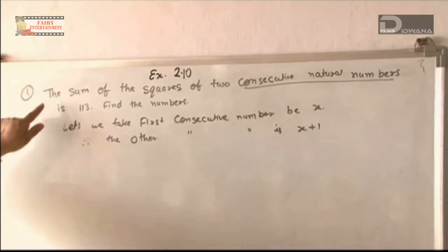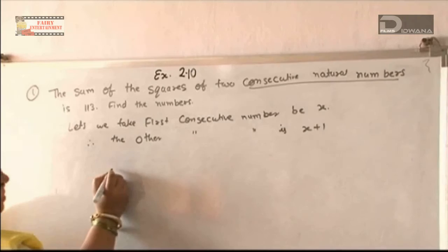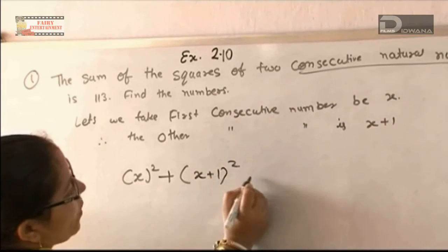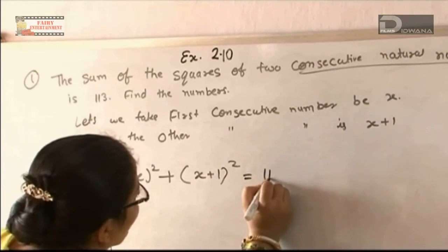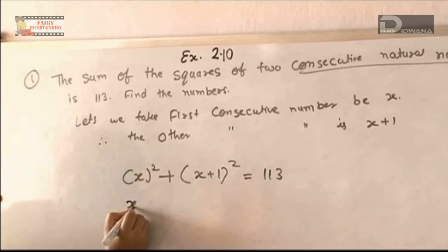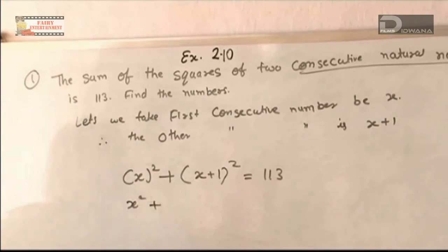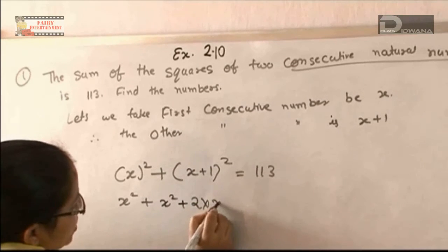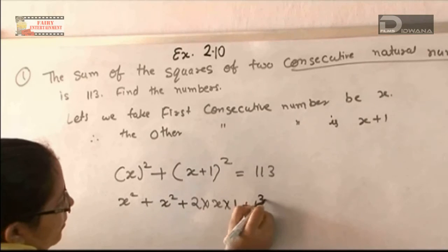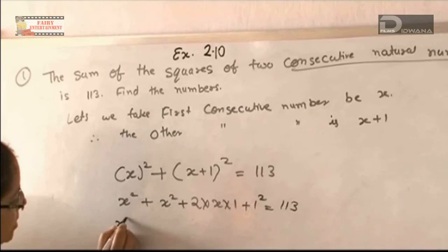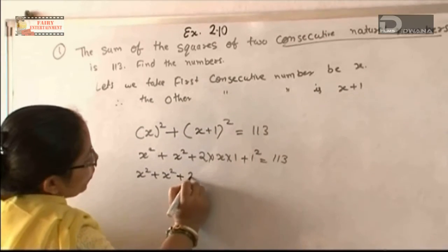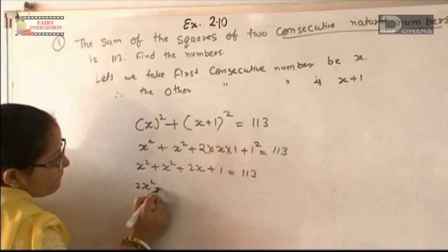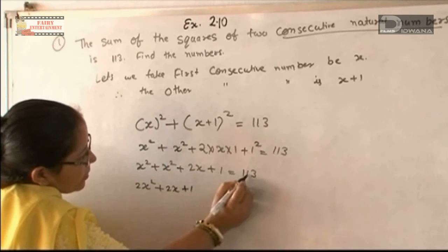The sum of the squares of the numbers: x squared plus (x+1) whole square equals 130. This is our equation. We will solve it. x squared plus (x+1) whole square — the formula is: first value squared, which is x squared, plus 2 into first value into second value, plus second value squared, equals 130.